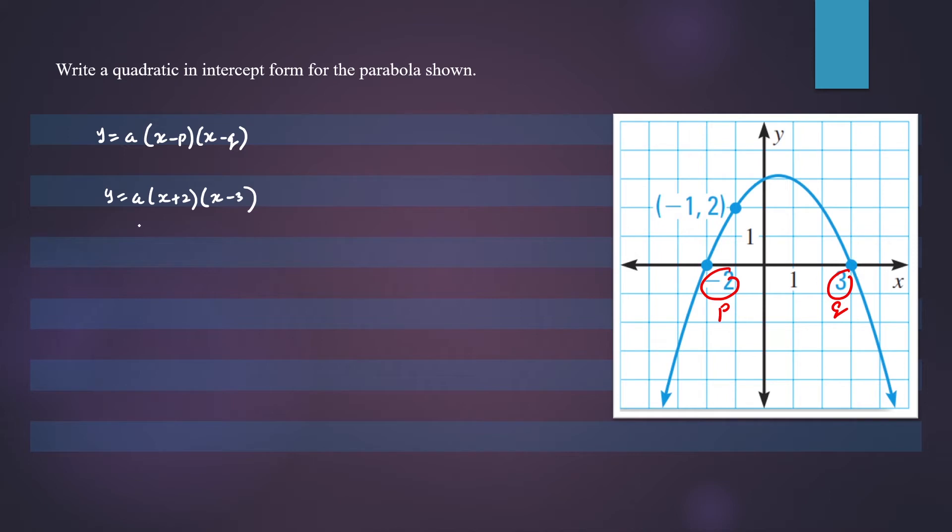And what you need to do now is find the value of a. And looking at our graph, a would be a negative value because your graph is opening in the negative direction. So a must be a negative number. So in finding a, we know that negative 1, 2 is on the curve.